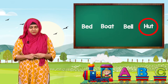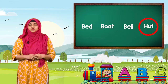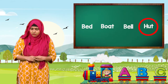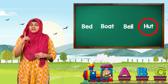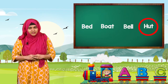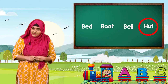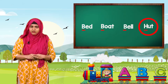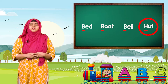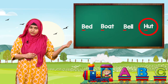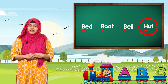Children, can you tell me why Hut is the odd man out? Hut is the odd man because the rest of the words start with the letter B, and Hut is the only word that starts with the letter H. Baaki ke sare words B letter se start hote hain, aur Hut letter H se start hota hai.